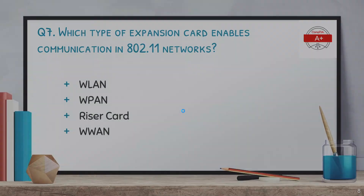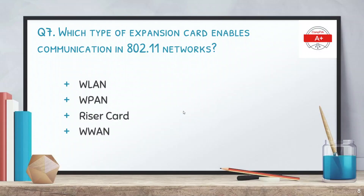The next question is: which type of expansion card enables communication in 802.11 networks? The options are WLAN, WPAN, riser card, and WVAN. The answer is WLAN, or the wireless LAN.